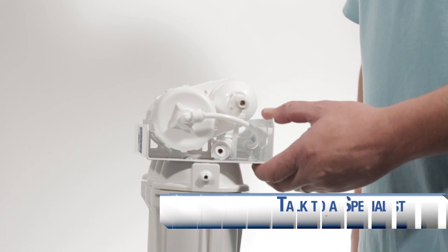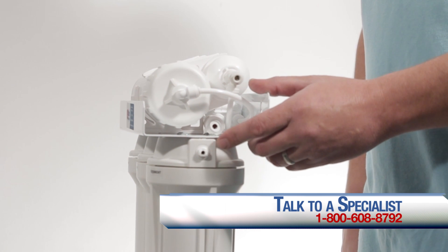Sometimes when you're changing filters, these fittings can break. Typically this happens if you drop the system when you're pulling it out of the cabinet or if you over tighten the fitting. Here we have one of our standard five stage RO systems and the inlet fitting has been broken off.